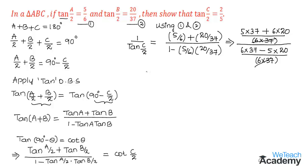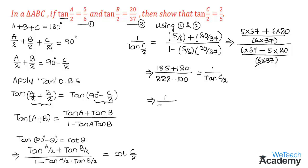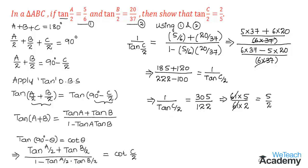Computing: the numerator is 5×37 = 185 plus 6×20 = 120, giving 305. The denominator is 6×37 = 222 minus 5×20 = 100, giving 122. So 1 by tan(C/2) equals 305 divided by 122. Writing 305 as 61×5 and 122 as 61×2, the 61s cancel, giving 1 by tan(C/2) equals 5/2.